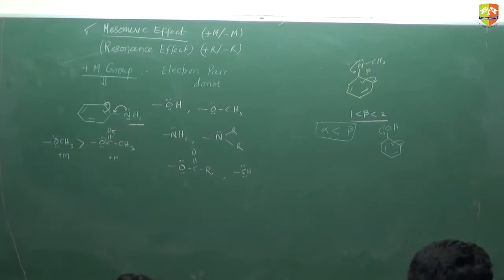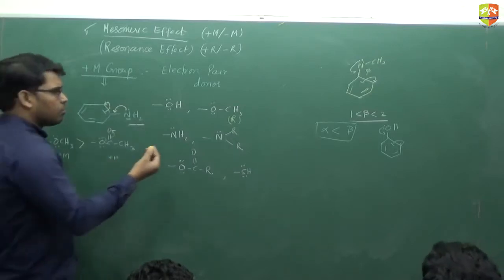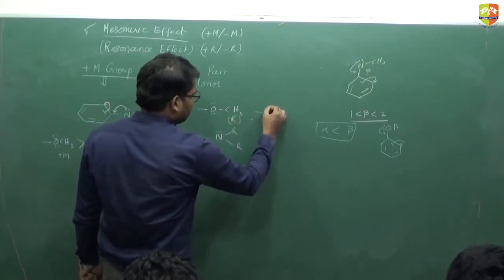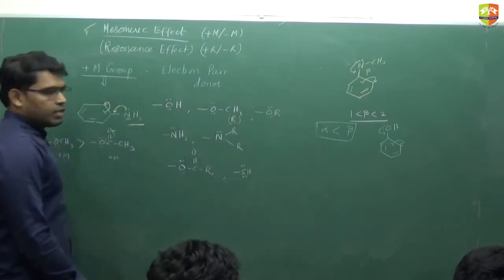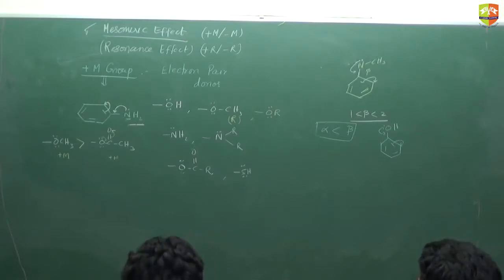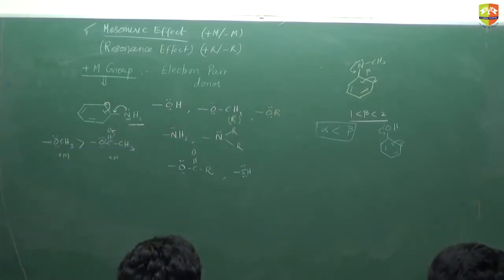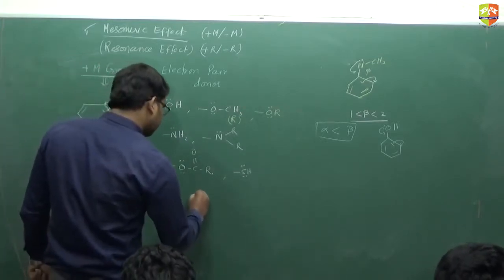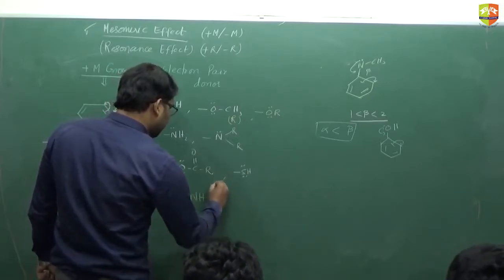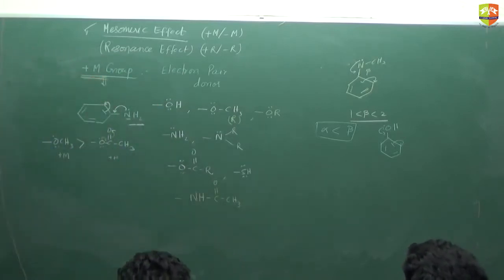OCH3 can also be written as OR. It is very important to identify the nature of the group first before finding other properties. For plus M effect, the first atom must have at least one lone pair. Another example is –NH–, which also shows plus M effect. These are the plus M groups.